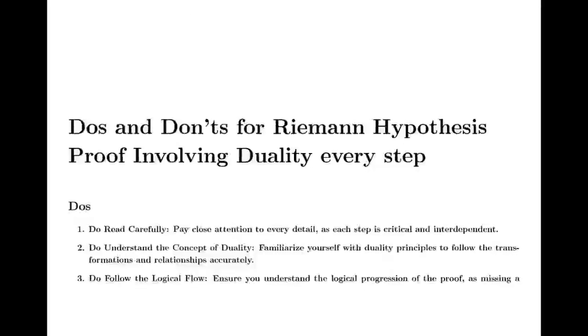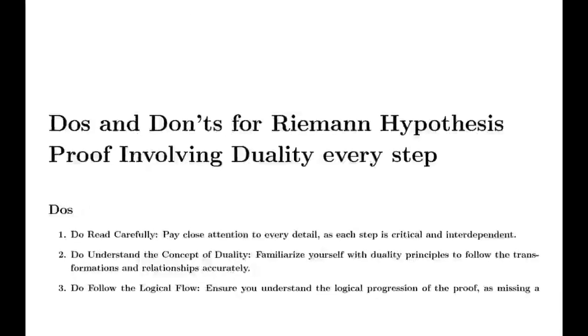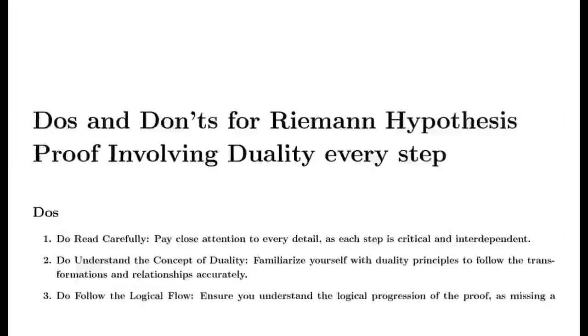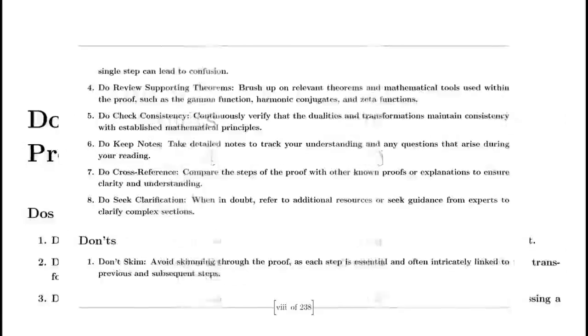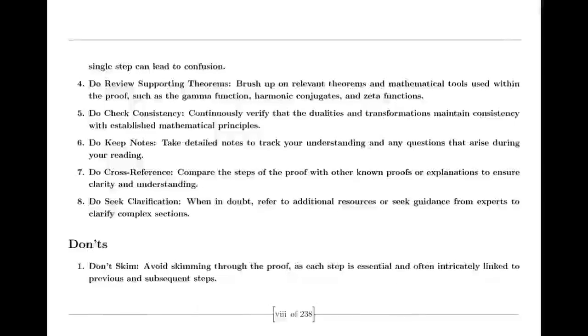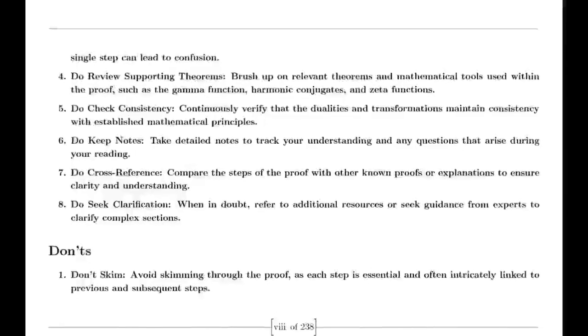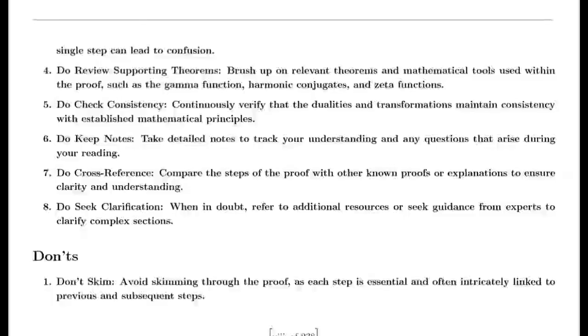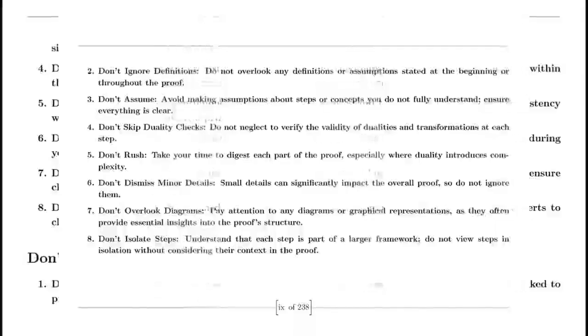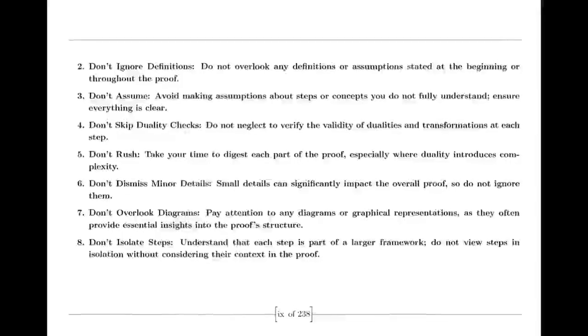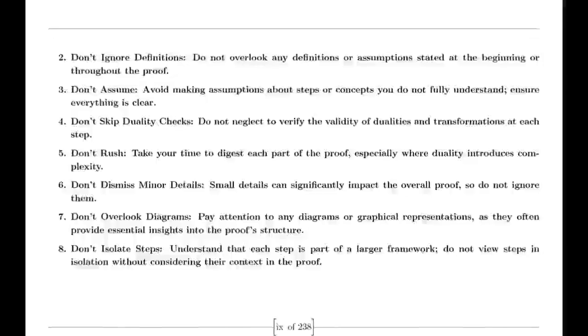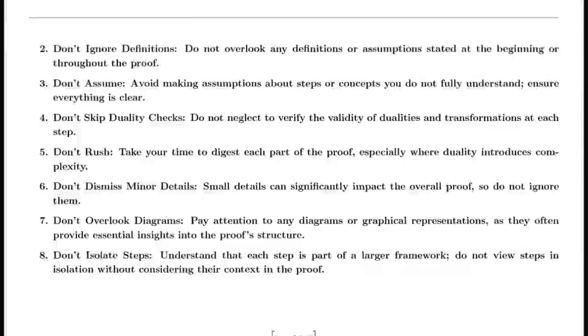Basel Problem Solution. Euler also tackled the Basel problem, concerned with finding the exact sum of the reciprocals of the squares of the integers. By examining the sine function and its product representation, Euler derived a formula for this sum, showing that the sum of these reciprocals equals π²/6. This result was a significant achievement in mathematics and highlighted Euler's ability to uncover connections between different mathematical concepts.